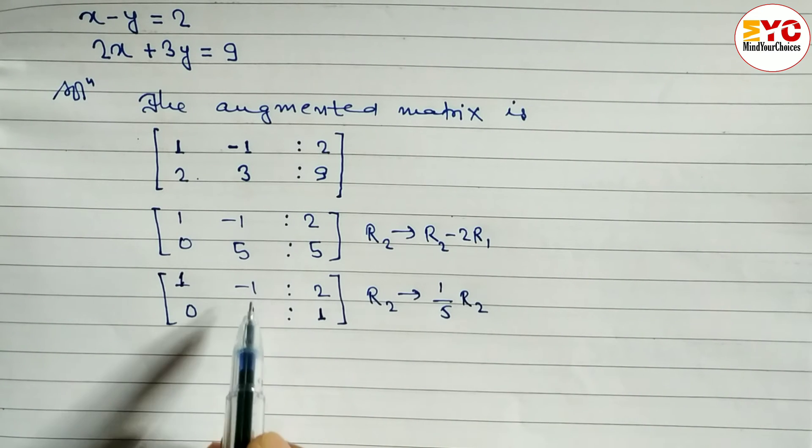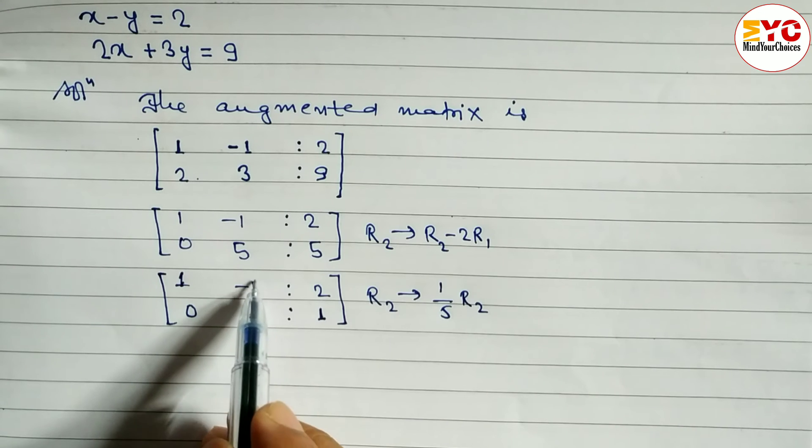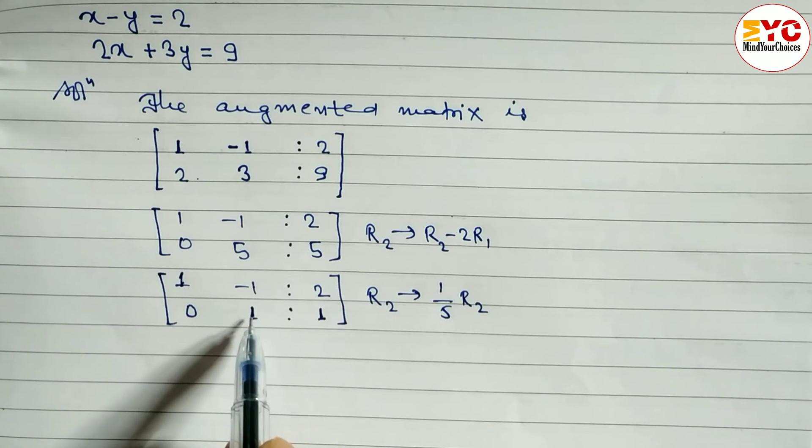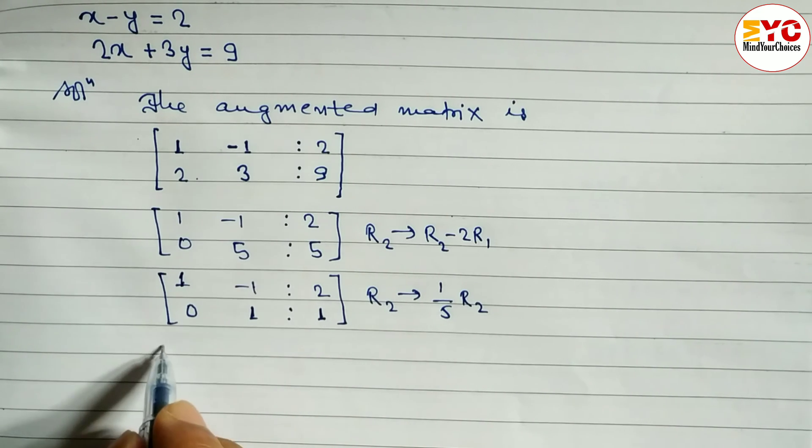After this, 1, 0, 1, 0. We have to convert this one in the form of 0. So how to convert in the form of 0? When you add this two, R1 and R2. What will get happen? Minus 1 plus 1 we get here 0. Let's add it.